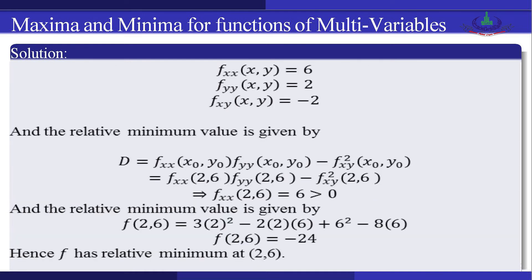Now we take the second-order partial derivatives: f_xx = 6, f_yy = 2, and f_xy = −2. The value of D = f_xx · f_yy − (f_xy)², evaluated at (2, 6), gives D = 6·2 − (−2)² = 12 − 4 = 8, which is greater than 0.